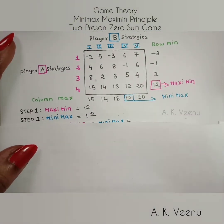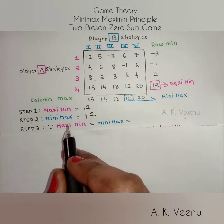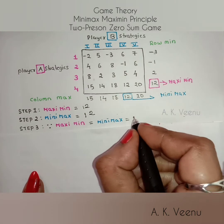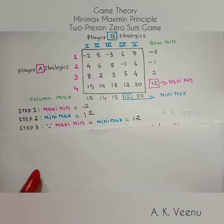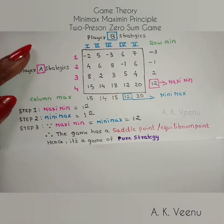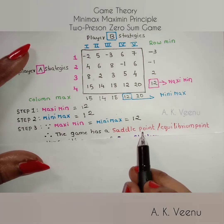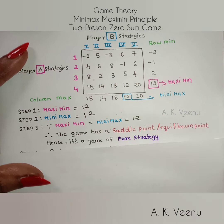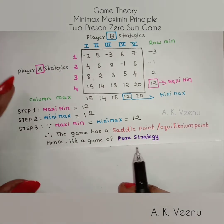Since maximin is equal to minimax, and both equal 12, the game has a saddle point — also called an equilibrium point. Hence it is a game of pure strategy.